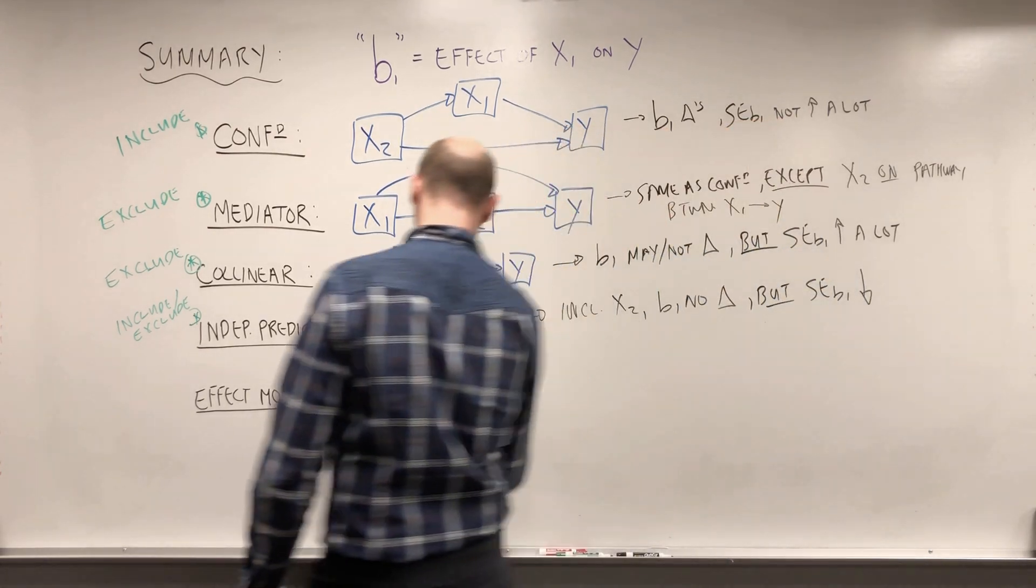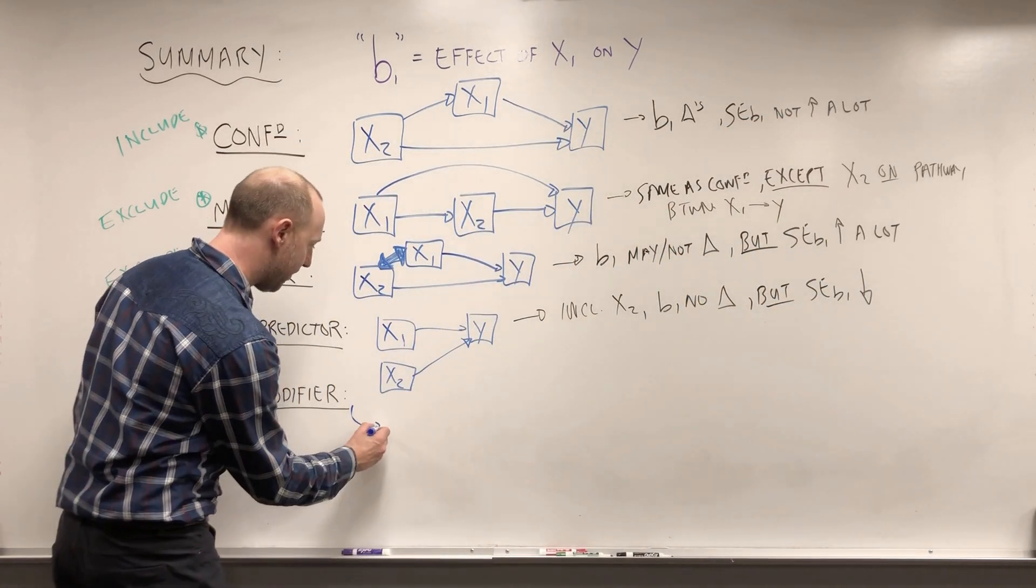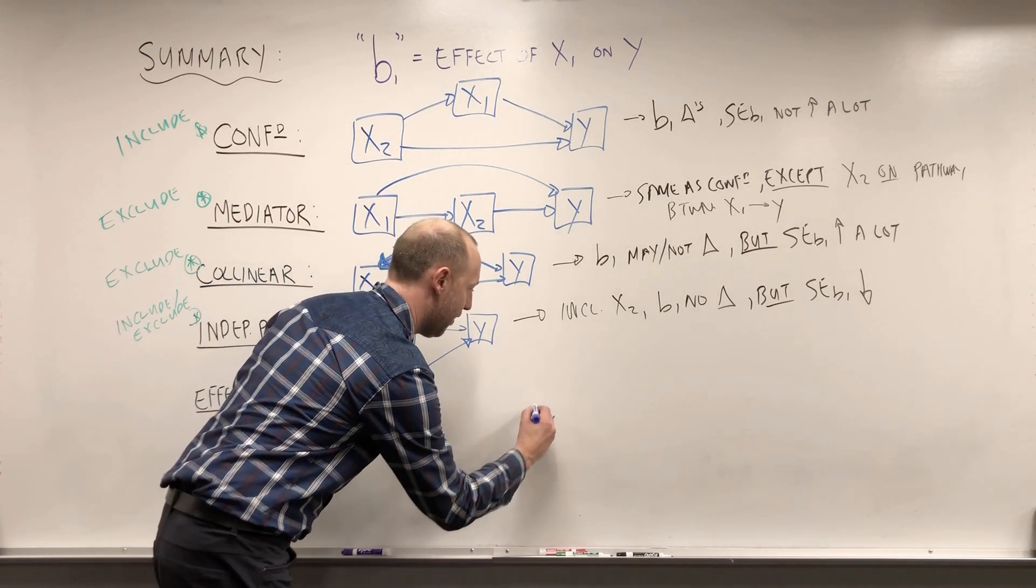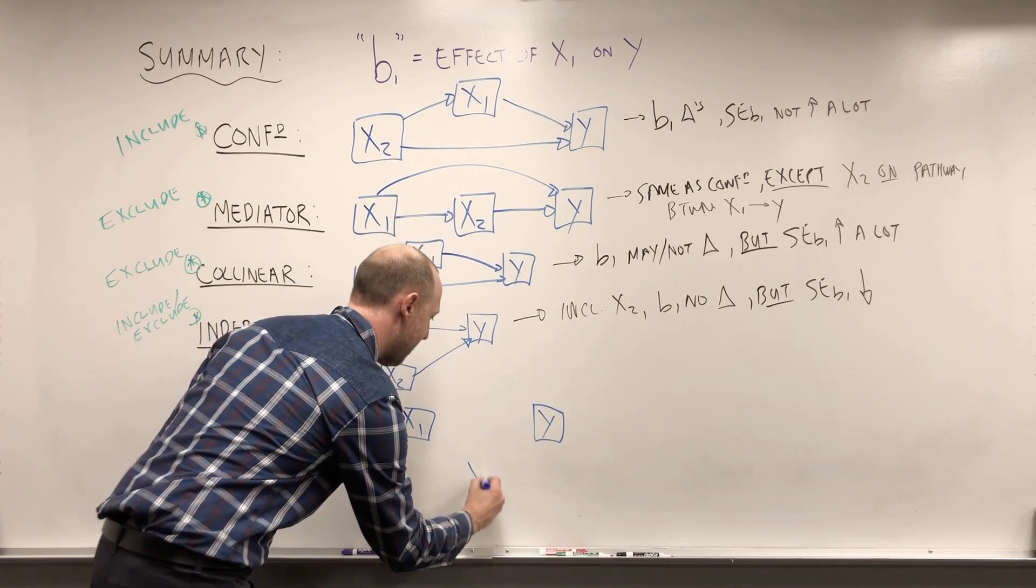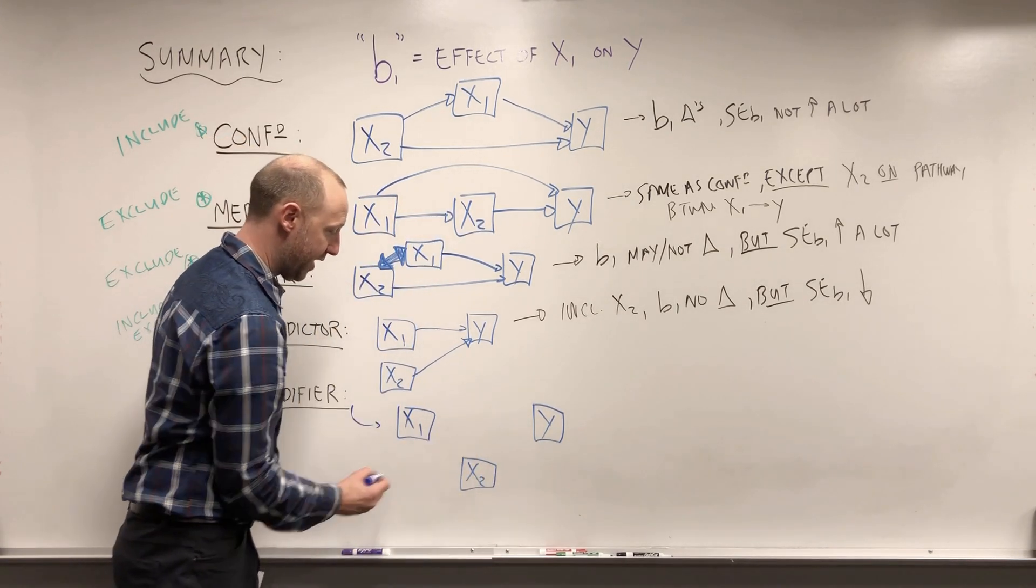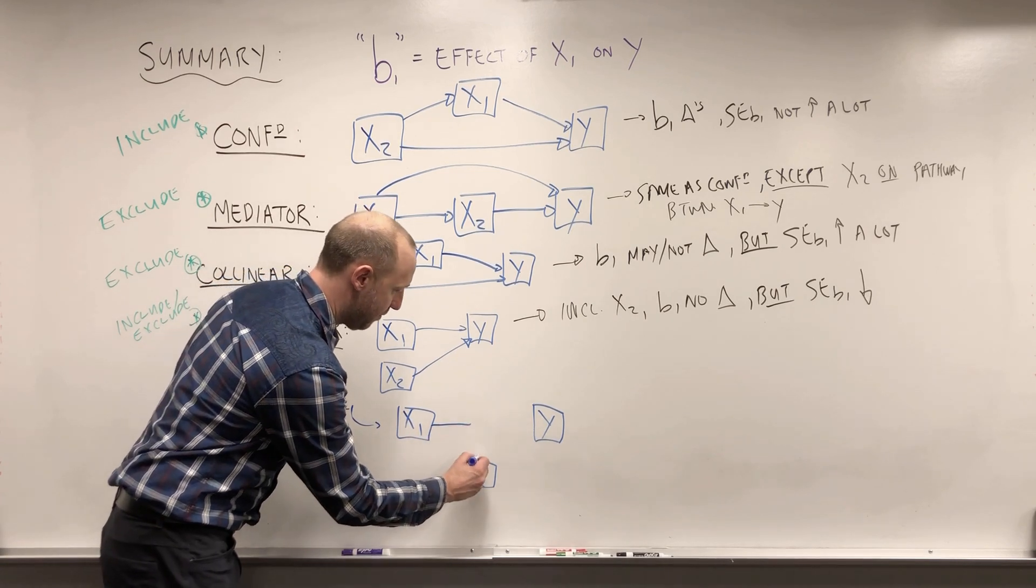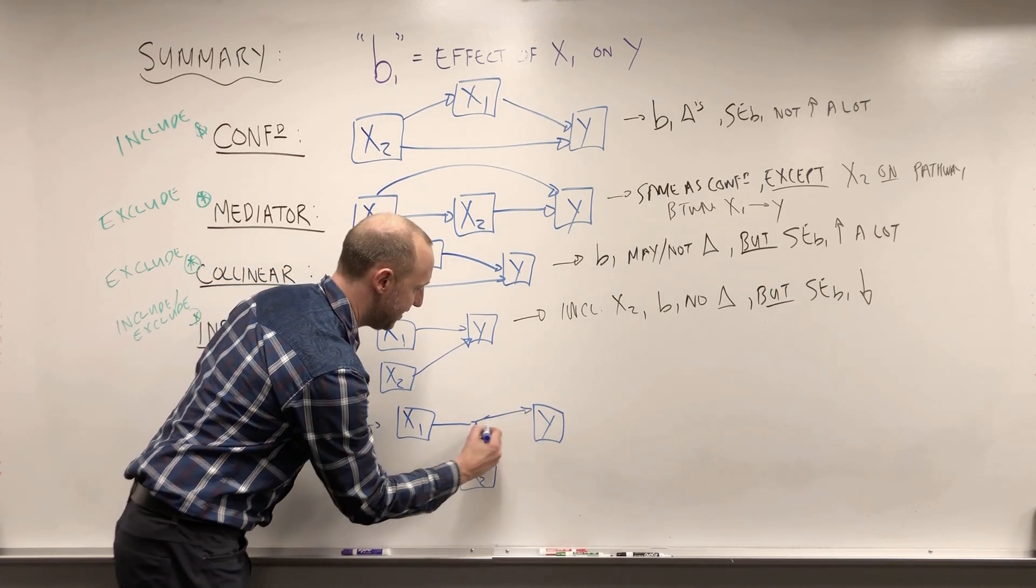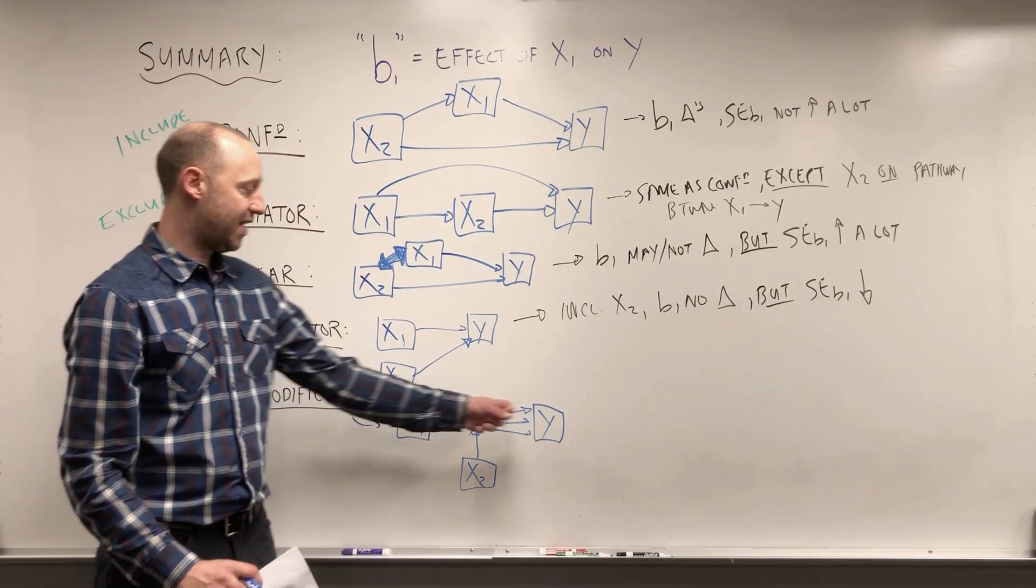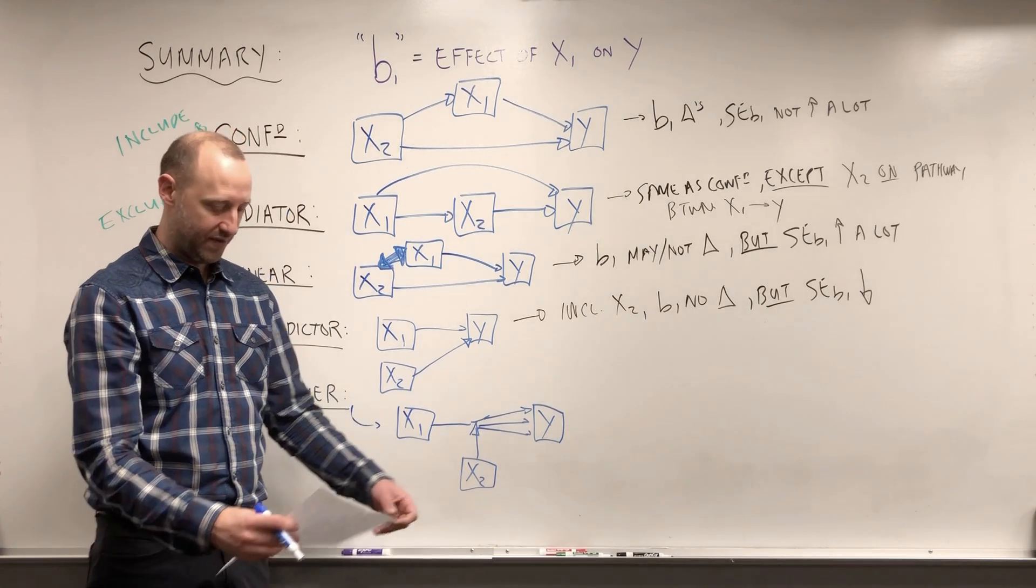And the final thing we talked about was an effect modifier. And this is where we're looking at the effect of X1 on the outcome Y. And there's some other variable X2. It's not on the pathway between X1 and Y. But what it does is it changes the effect of X1 on Y. So the effect that X1 has on the outcome changes depending on values of X2.